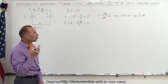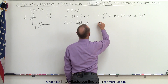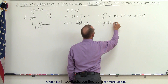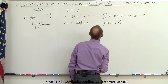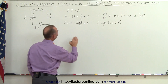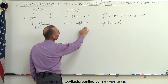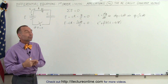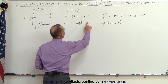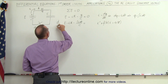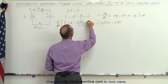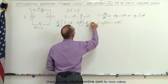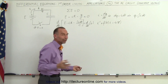We want the general form where we have I prime plus some function of time times I equals some other function of time. To get there, we take the derivative with respect to time of every term in the equation — the derivative of both sides. The D/DT of the left side equals the D/DT of the right side, and of course the right side is zero, which makes it easy.